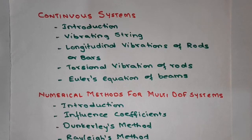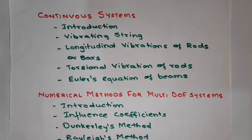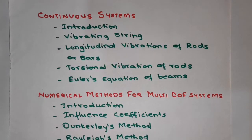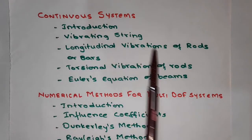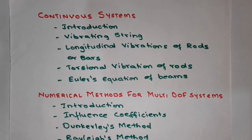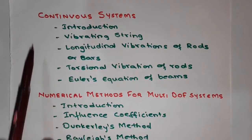In chapter seven on continuous systems, we will see what continuous systems means — systems like strings, rods, beams, and bars. We will derive the expression for a vibrating string, solve the differential equations, and study longitudinal vibrations of rods and bars with numerical problems. We will also see torsional vibration of rods and Euler's equation for beams.